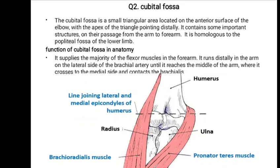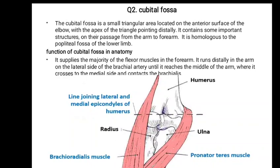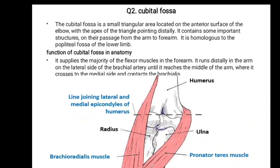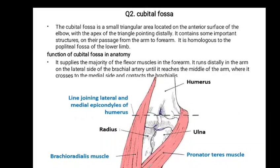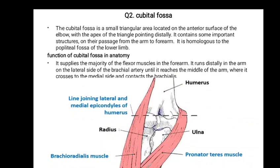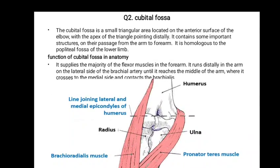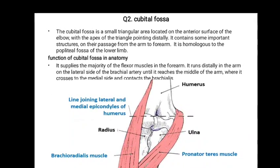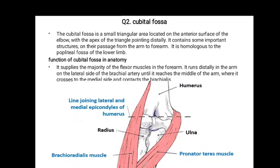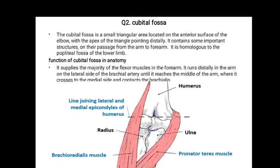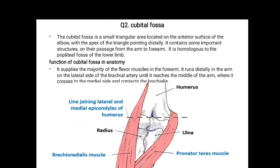Question number two: cubital fossa. The cubital fossa is the small triangular area located on the anterior surface of the elbow, with the apex of the triangle pointing distally. It contains some important structures on their passage from the arm to the forearm. It is homologous to the popliteal fossa of the lower limb.